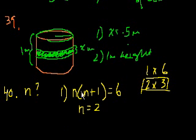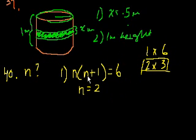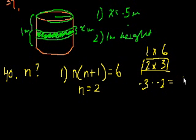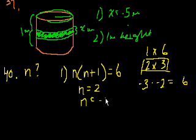Actually, let me take a step back. What if n is negative? I was assuming it's a positive integer, but they didn't say that. If I did minus 3 times minus 2, that also equals 6, and these are both integers. So in this case, n could be minus 3 and n plus 1 would be minus 2. So n is either equal to 2 or n is equal to minus 3. Statement 1 alone is not sufficient — that's a tricky one.